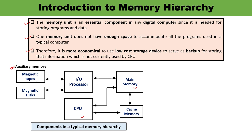Auxiliary memory backup storage — magnetic tapes and magnetic disks — can be used as backup space. Auxiliary memory is used for storing programs, large data files, and other backups. Only the programs and data currently needed by the processor are retained in the main memory; all other information can be stored in the auxiliary memory and transferred to main memory whenever required.